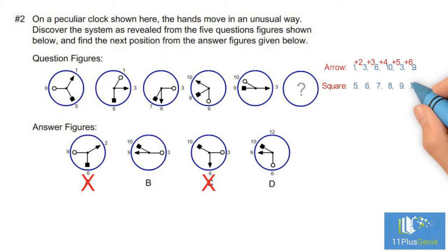The hand with the circle: 9, 1, 3, 6, 10. The pattern is +4, +2, +3, +4. For the next clock we must add five, which takes the hand to 3. We can also see that the circle takes the place of the arrow. The correct answer is B.